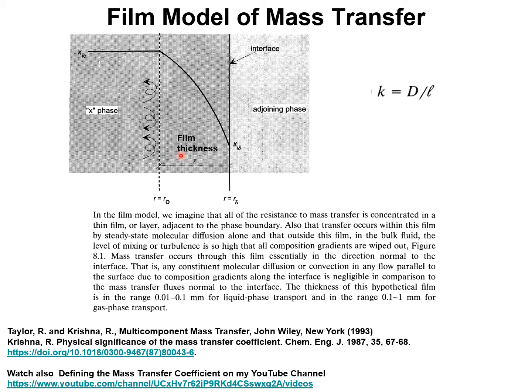The thickness of this hypothetical film is in the range of 0.01 to 0.1 millimeter for liquid phase transport and in the range of 0.1 to 1 millimeter for gas phase transport. The expression for the mass transfer coefficient is given by the ratio of the fixed diffusivity to the thickness of the film.